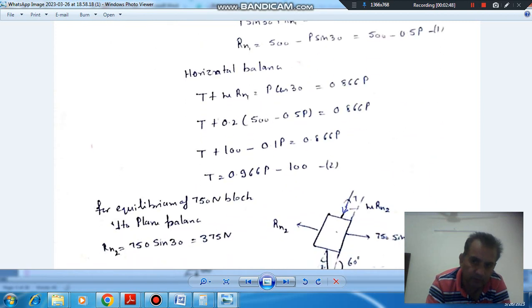So it means the force of friction will be acting in downward direction, so mu R_N2 will be in downward direction along the plane, and T is the tension on this side.